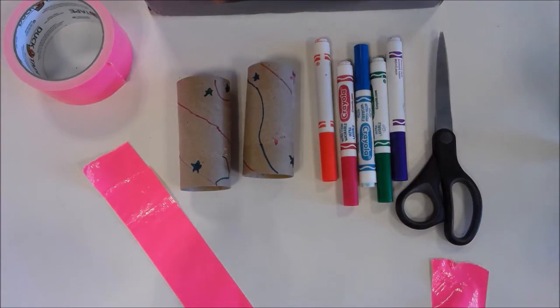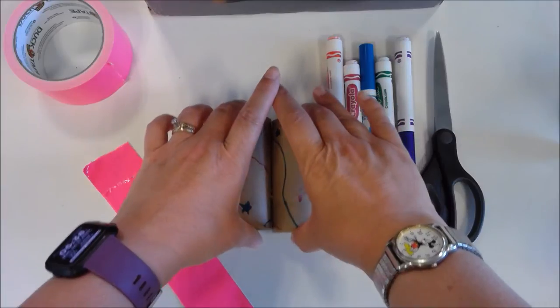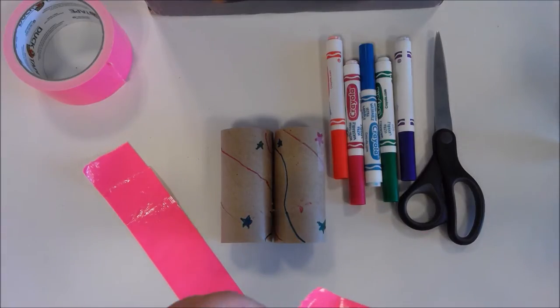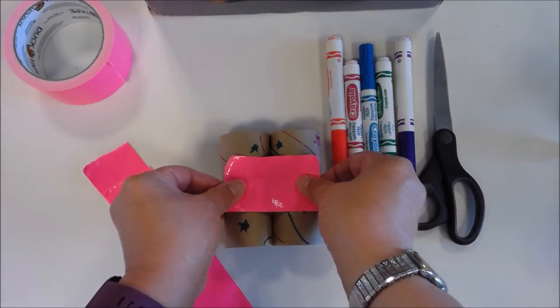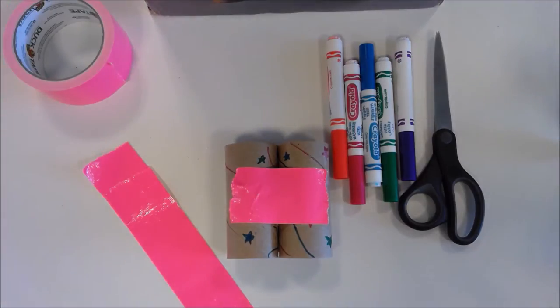So the first thing you want to do is take your two tubes and put them together just like that. You want them to be together. The next thing you want to do is take a little piece of tape. I tore off a little piece of duct tape already. Stick them together just like that in the middle. This will keep them from getting away on you when you are taping the whole thing together.